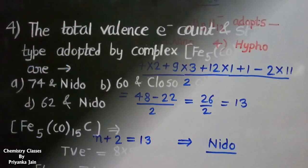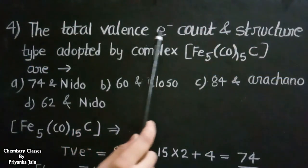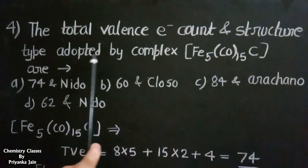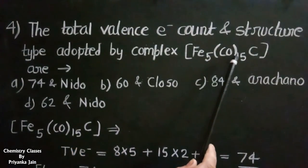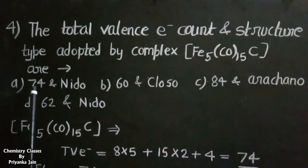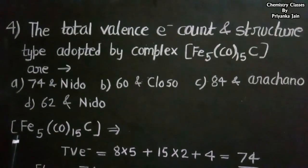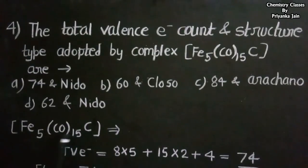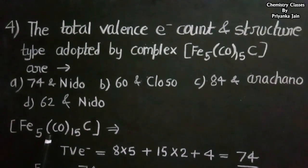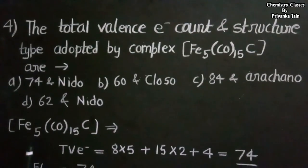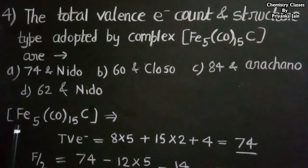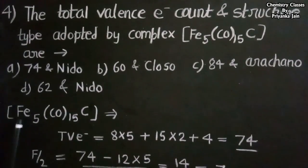The next question: what are the total valence electron count and structure type for the complex Fe5(CO)15C? Options are: A) 74 and nido, B) 60 and closo, C) 84 and arachno, D) 62 and nido. In Fe5(CO)15C, there are 5 iron atoms, 1 carbon, and 15 carbonyl ligands. Iron has 8 valence electrons.